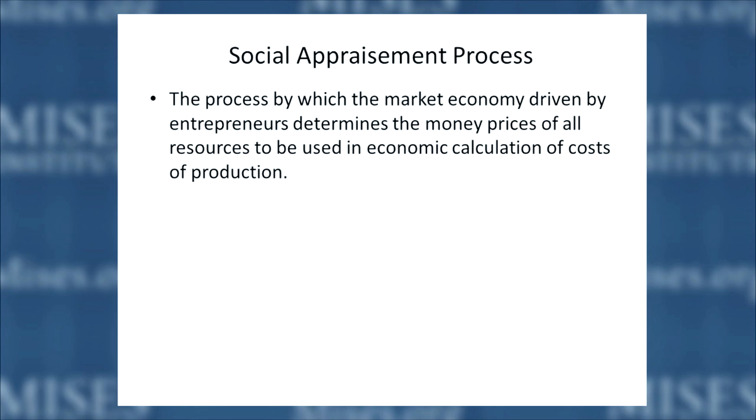Now I want to talk about the essence of the market economy — what Mises called the intellectual division of labor, not to be confused with what Hayek called the division of knowledge. The intellectual division of labor tells us that everyone, no matter their status, job, or income, participates in creating the price system — the price system which allows calculation. Mises called this a social appraisement process. It's what allows prices of resources to emerge from the interaction of human beings. No one human being can create a price system. The price system is not the outcome of a single human will or mind. It transcends human beings, though all of us contribute to it.